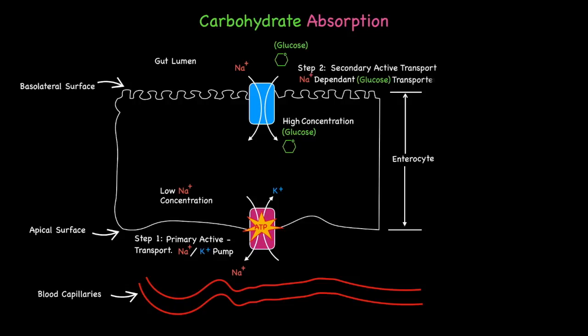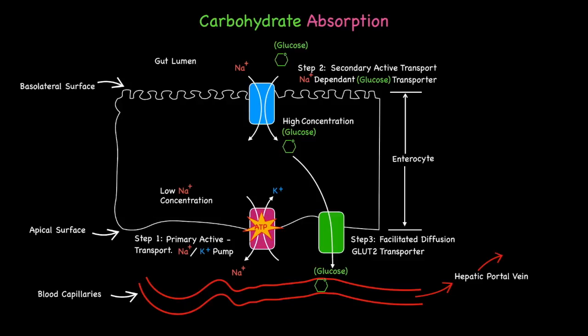Eventually, the glucose concentrations within the cell begin to rise above that of the surrounding tissues, and more specifically, the extracellular fluid and blood capillaries on the apical side. This brings us to the third step, which involves a third type of transport protein, termed GLUT2, and works via the process of facilitated diffusion, and is located at the apical surface of the cell facing the blood capillaries. In this final step, glucose is transported out of the cell and into the bloodstream along its diffusion gradient. Once in the bloodstream, glucose is transported to the liver via the hepatic portal vein.